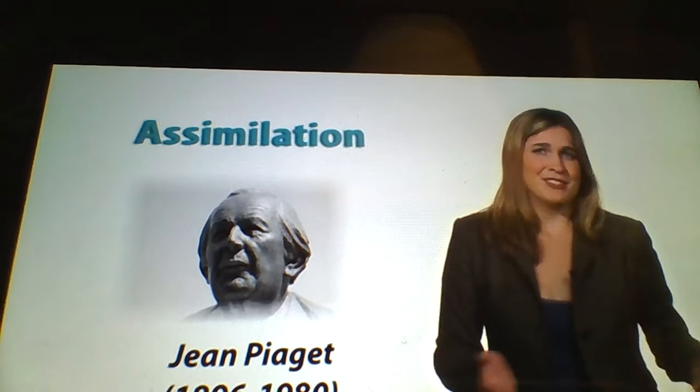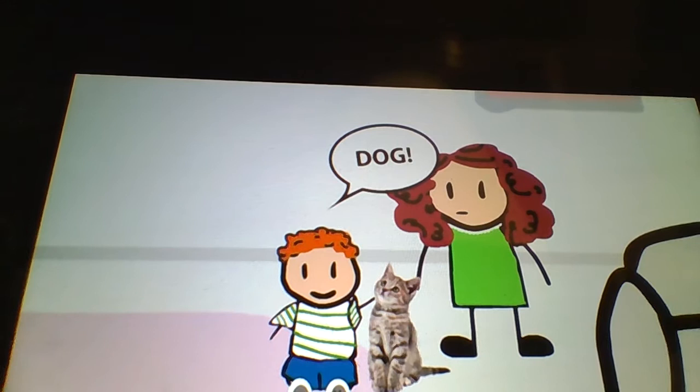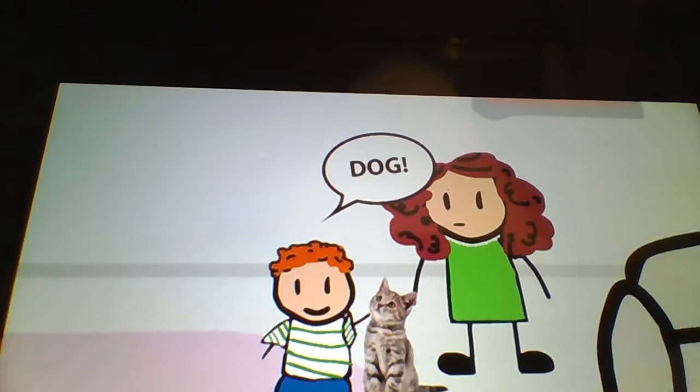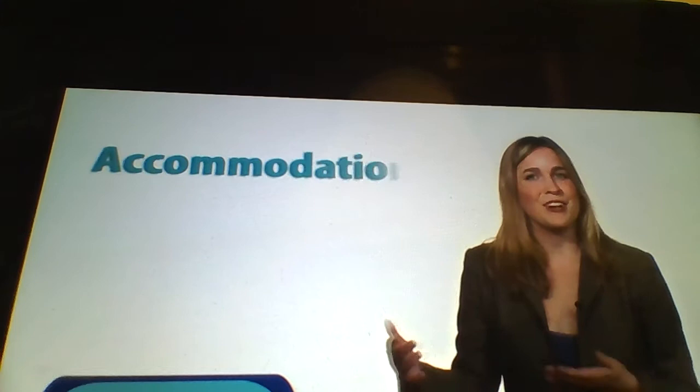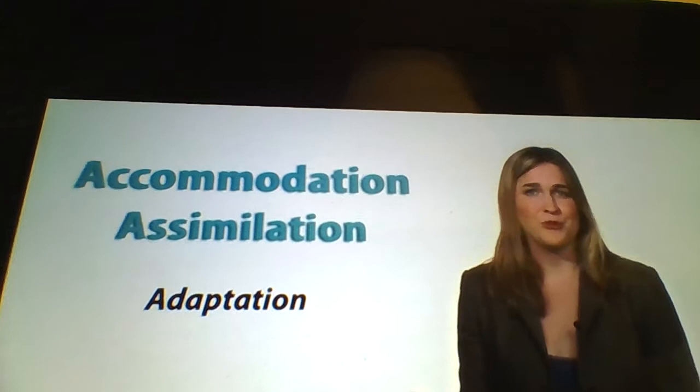Let's say Jack next visited his aunt, who has a cat. Jack points to the cat and says 'dog.' His concept of dog, which successfully included both Rufus and his grandmother's poodle, is too broad — he calls anything with four legs and fur a dog. His father explains that this is a cat, and Jack adjusts his concept of dog accordingly. This is known as accommodation. Both are part of Piaget's idea of adaptation, or the ways in which children learn about and categorize the world.